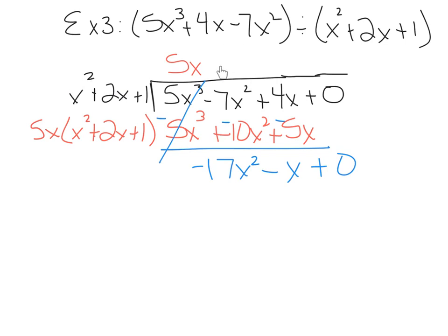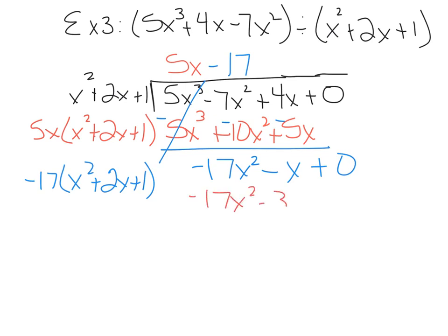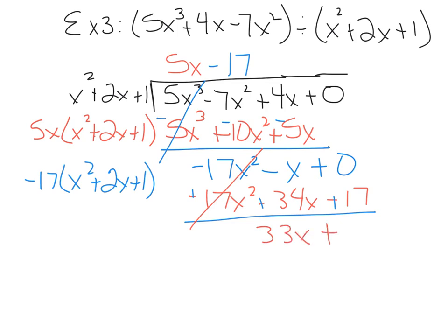x squared times what makes negative 17x squared? That would be negative 17. Distribute negative 17 times x squared plus 2x plus 1 and write it underneath: negative 17x squared minus 34x minus 17. When you get ready to subtract, you change the signs — so these become all positives. First terms cancel, and when you combine like terms, this becomes 33x plus 17.